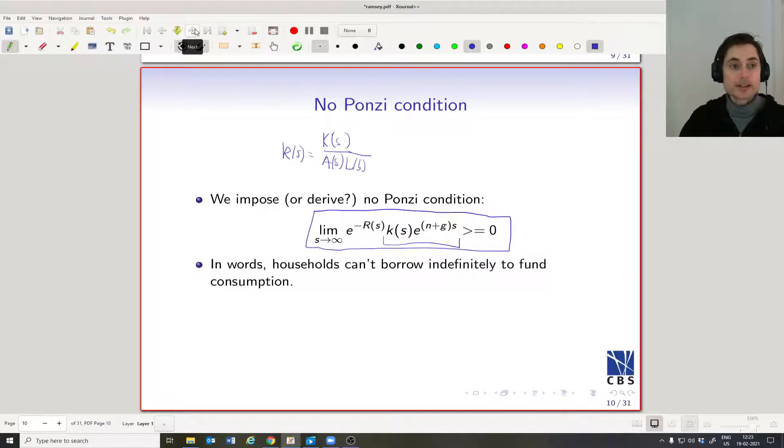You can think of it as another constraint on household decisions. They have a budget constraint and then they also have this No Ponzi constraint.